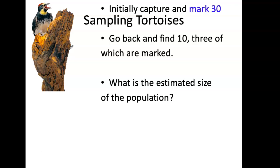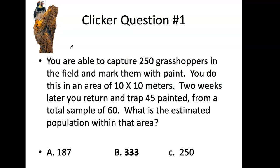The same example applies to tortoises: initially mark 30, go back and find 10, three of which are marked — giving an estimate of 100. You can change those numbers and practice. Here's another example: capture 250 grasshoppers and mark them with paint. Two weeks later you return, trap 60, and 45 of them are painted. What is the estimated population? That's for you to practice.